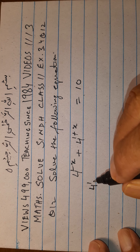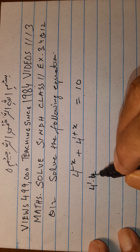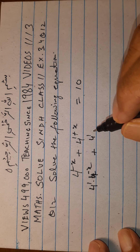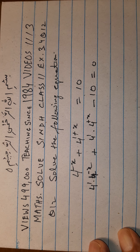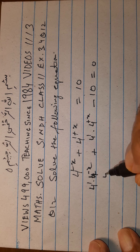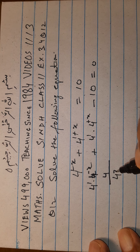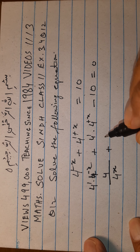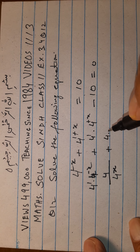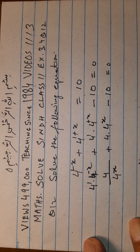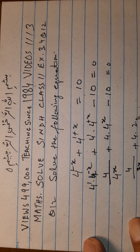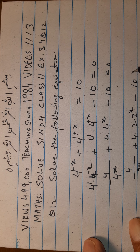Here we can write 4 power 1 into 4 power minus x, and here we can write 4 power 1 into 4 power plus x, minus 10 is equal to 0. This we can write as 4 upon 4 power x plus 4 into 4 power x minus 10 is equal to 0. Or we can write 4 into 2 power 2x plus 4 into 2 power 2x minus 10 is equal to 0.